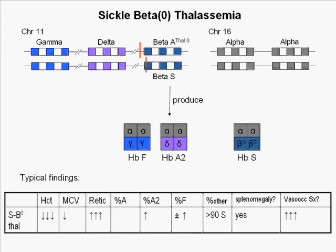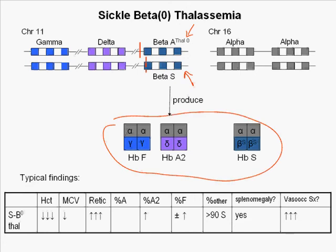In sickle beta zero thalassemia, one beta globin gene carries a mutation that completely eliminates its production of beta globin and the other has the hemoglobin S point mutation. Three hemoglobins are produced: slightly elevated amounts of hemoglobin A2 and variable but somewhat elevated levels of fetal hemoglobin, with the bulk being sickle hemoglobin. Individuals with S beta zero thalassemia have a fairly severe chronic hemolytic anemia with low hematocrit, elevated reticulocyte count, and severe vaso-occlusive morbidity.